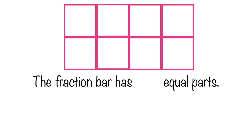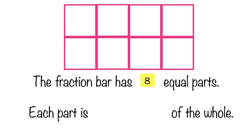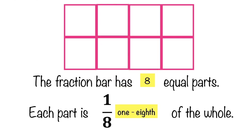How about if we have eight? The fraction bar has blank equal parts — how many equal parts do we have here? That's correct, we have eight equal parts. Each part is blank of the whole. That's correct, we have one-eighth. Each part is one-eighth of the whole.